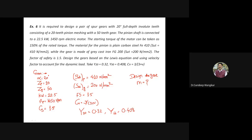In previous numericals the material was the same, so only one Sut value was used and Y was given only for the pinion — in those cases we directly say pinion is weaker. But here the material is different, so we must first decide whether to design for the pinion or the gear. After that decision, all further calculations follow the standard procedure to find module, face width, and dimensions.